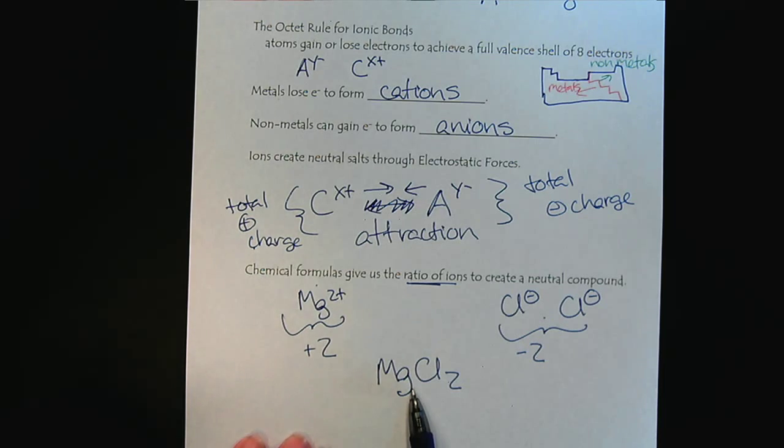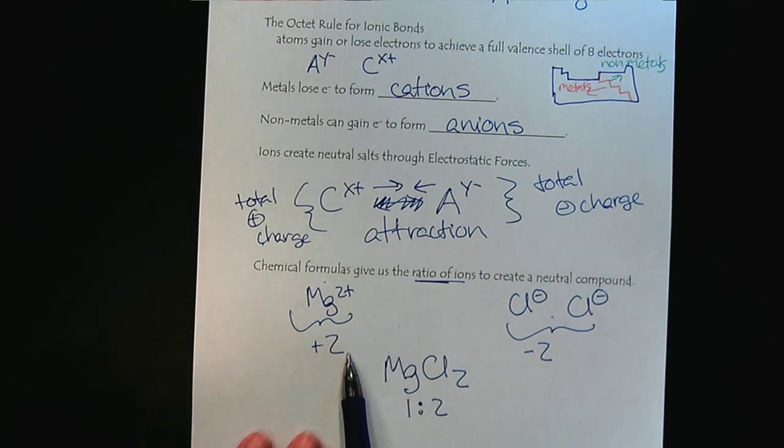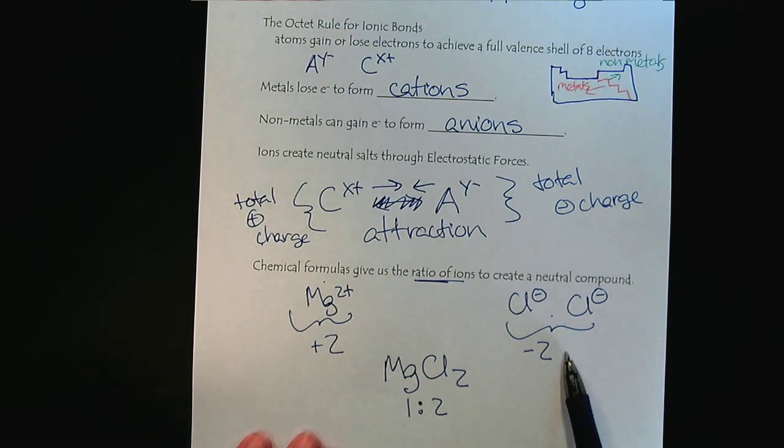And so we use the bottom right corner, the right subscript, to show the ratio. We never show the ones. So this is understood to be a 1 to 2 ratio. 1 magnesium to 2 chloride ions. They will be attracted to each other electrostatically. They will create a crystal lattice for the solid magnesium chloride.